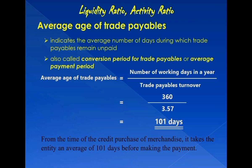For this ratio to be meaningful, it must be compared with the credit period extended to the entity. For example, if suppliers provide 90 days to pay trade payables, having 101 days as the average age means the entity pays beyond the credit period, which most likely will damage its reputation with suppliers.